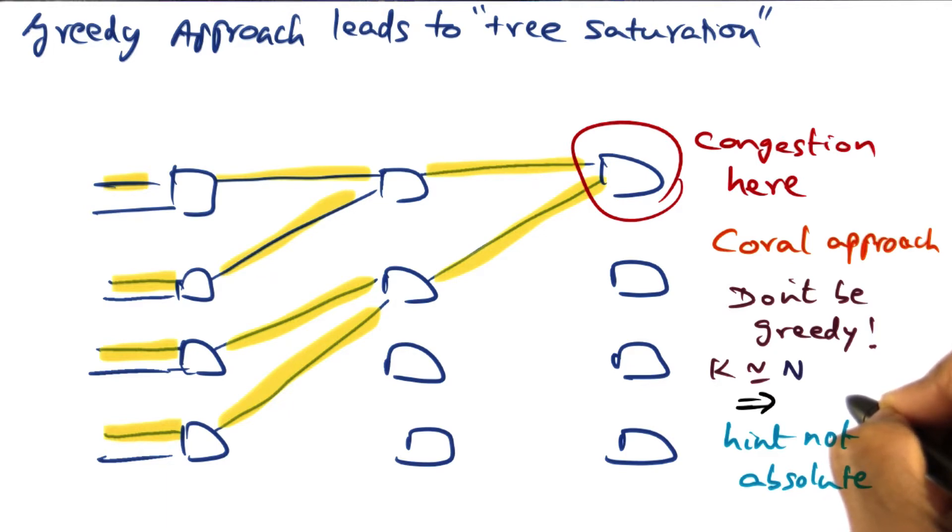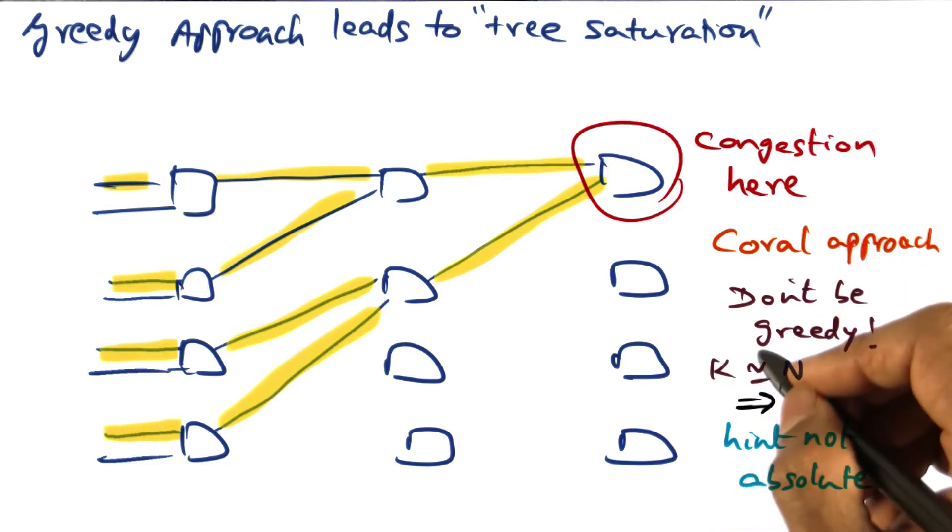But you still have to have a method to the madness. If you're going to store it in some place different from n, then those who are trying to discover it have to have a method to the madness of where you have stored your key. We'll see how that is done.